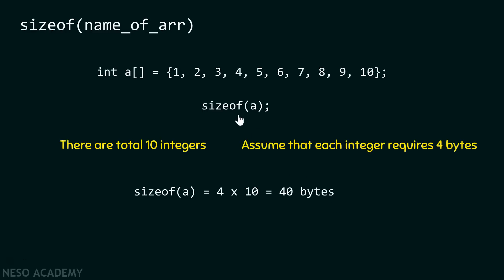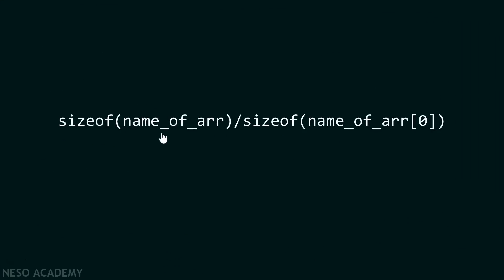We already know sizeof operator gives you the size in bytes. And as we are assuming that each integer requires four bytes and there are total ten integers in this array, therefore the size of this array is going to be 4 × 10 which is equal to forty bytes. Right? So, this is clear.